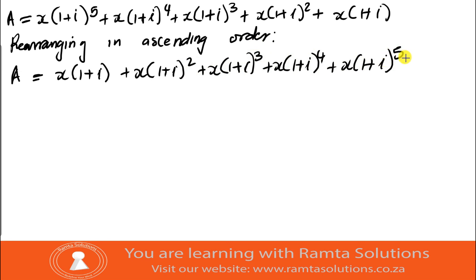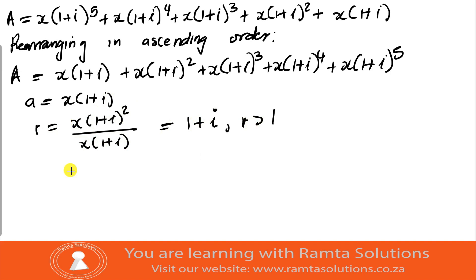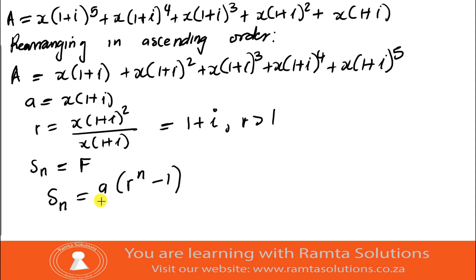As you can see this continues over and over, and it looks like a geometric series. Your first term is x(1+i). Your common ratio r is (1+i)² divided by x(1+i), which gives r equals (1+i). Since r is greater than one, the formula to use is: S_n equals a times (r^n - 1) all over (r - 1). We'll call S_n as F.